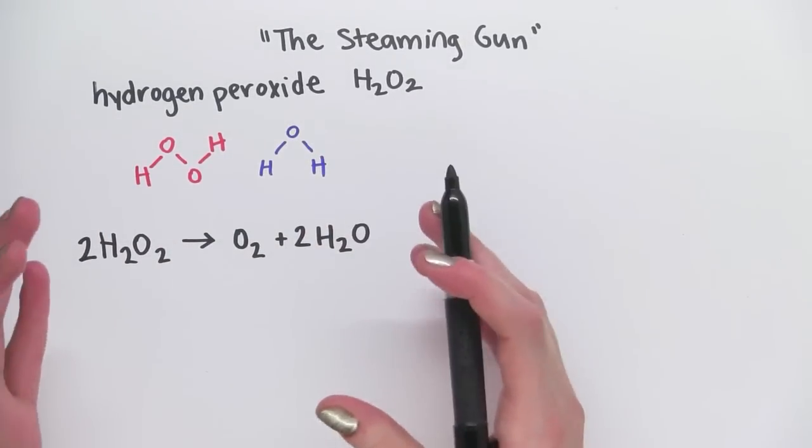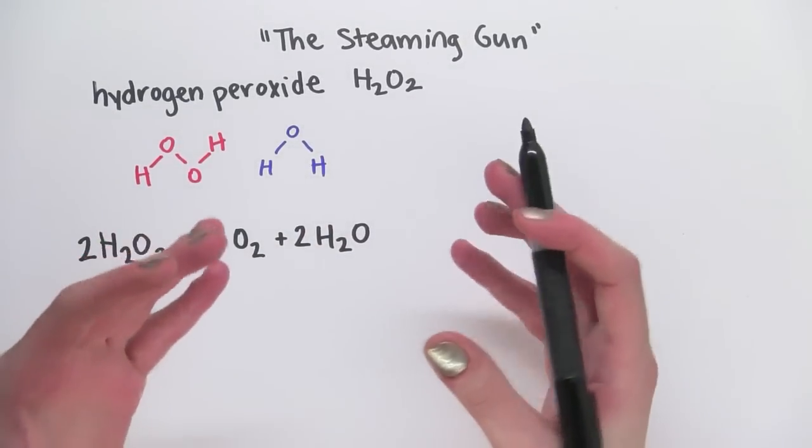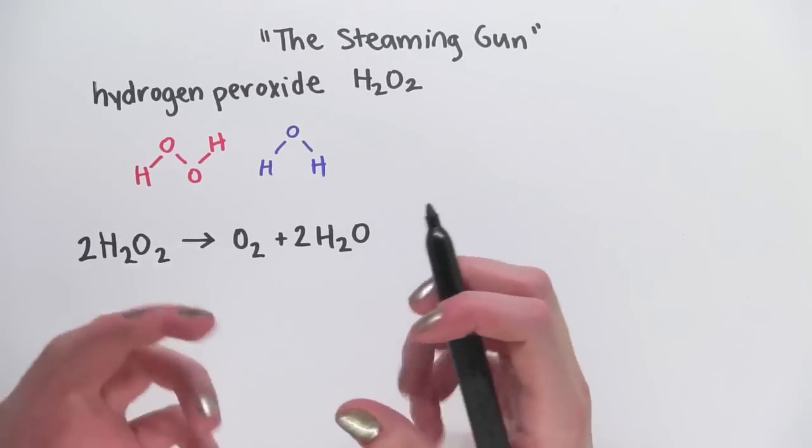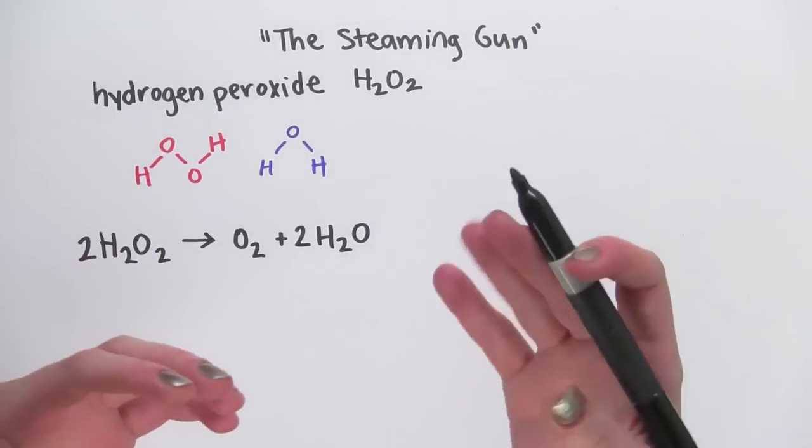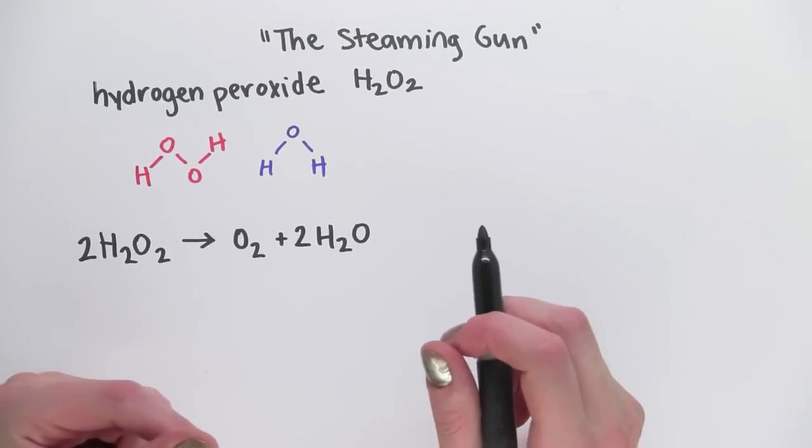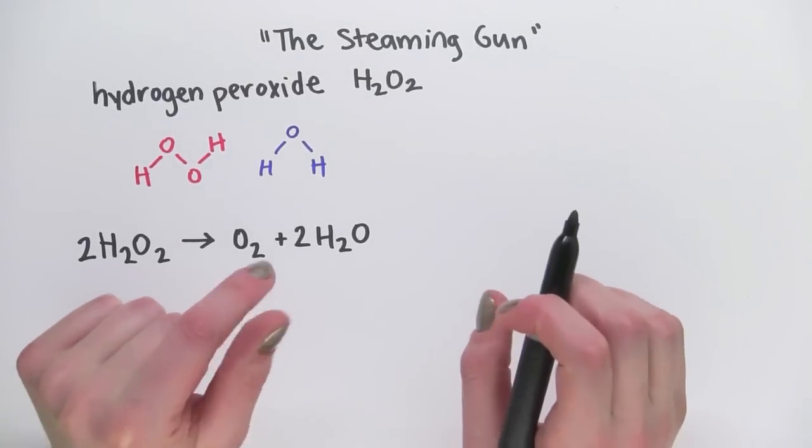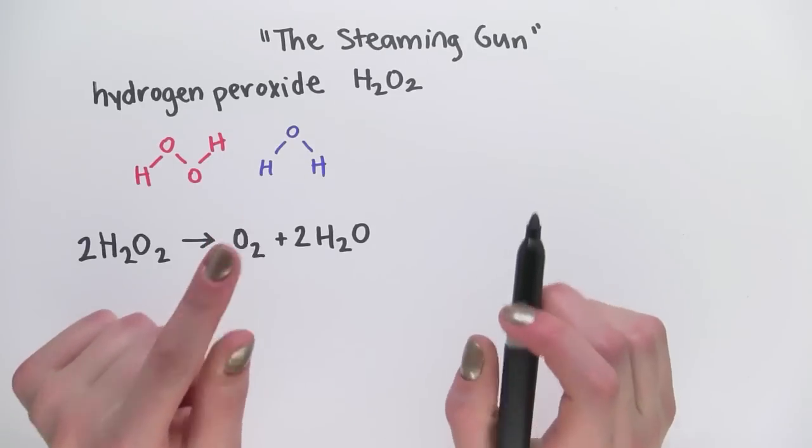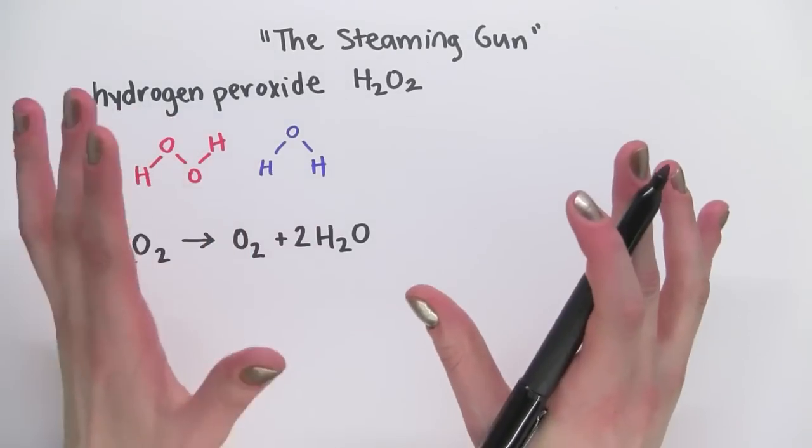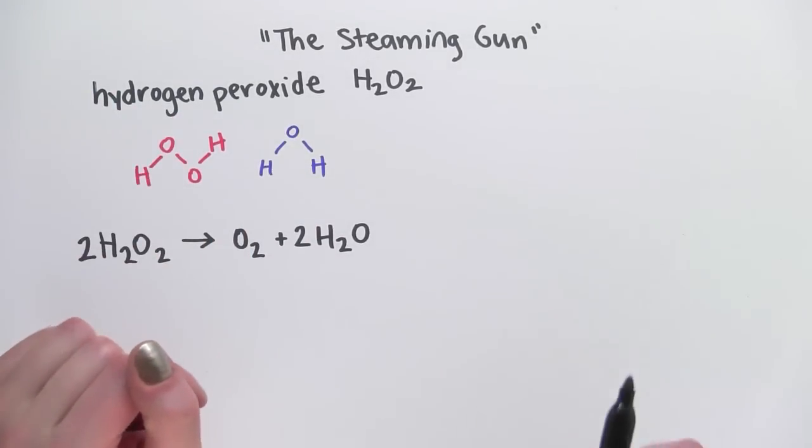Now normally you can't see this reaction happening because at room temperature it's very slow. But there are many ways to speed it up, like increasing the temperature or adding a catalyst. In this demonstration, MIT's Dr. John Dolan uses a catalyst to make the reaction go thousands of times faster than normal. Let's watch.